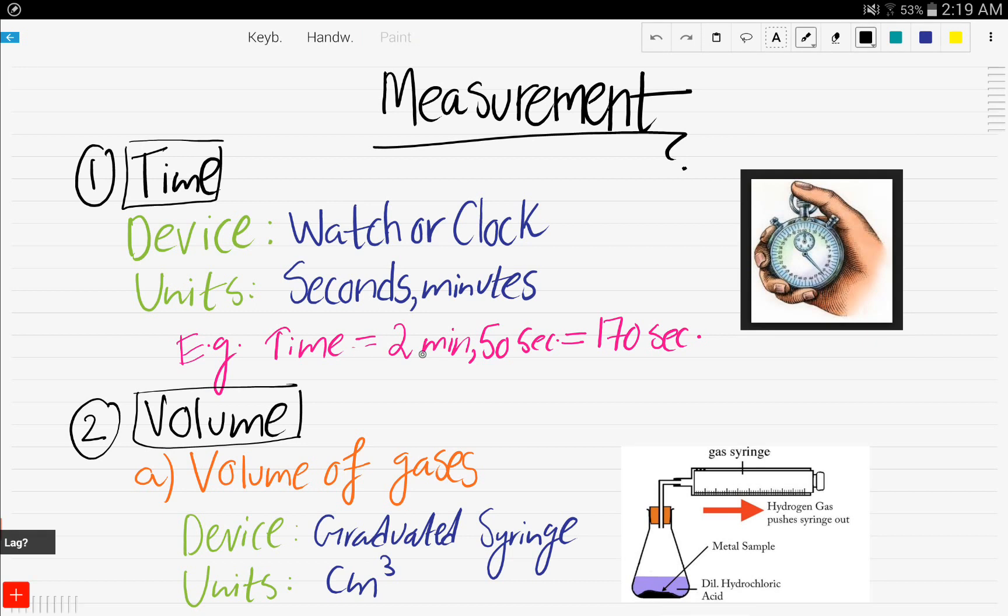So for example, you have to know that a minute is 60 seconds. So if you have 2 minutes 50 seconds, it is equivalent to 170 seconds. That's pretty easy.